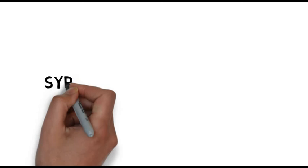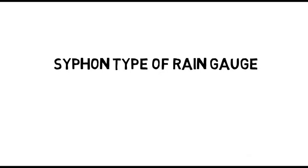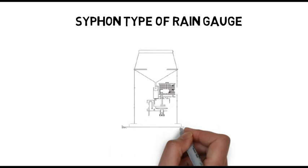This rain gauge is also used to measure snow. And the next one is siphon type of rain gauge. This is the schematic representation of siphon's rain gauge.